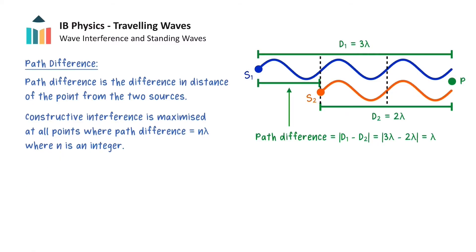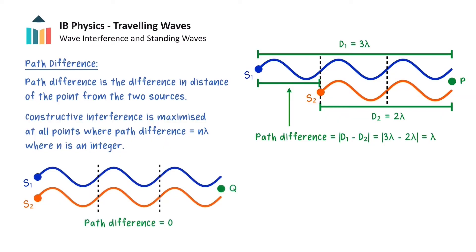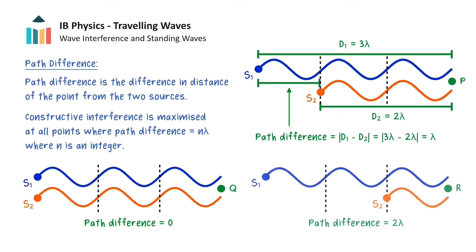For example, the two sources could be aligned with each other, resulting in a path difference of 0, or the two sources could be separated by a path difference of 2 lambda. In all of the cases shown, the waves arrive in phase at each of the given points, so constructive interference of the two waves is maximised at these points.